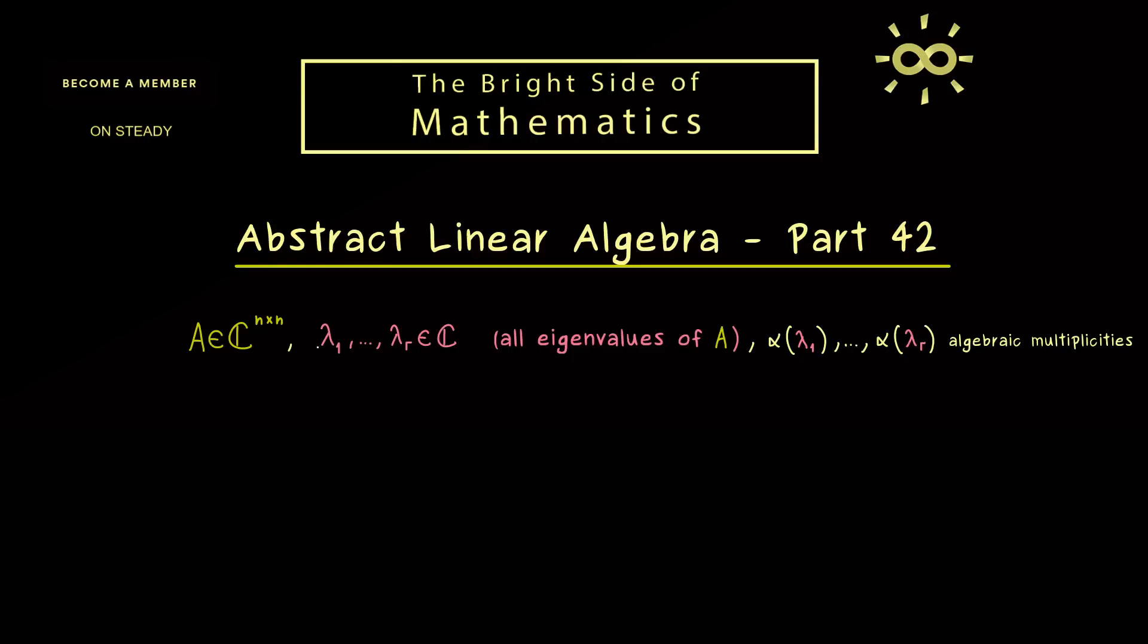And now we can simply fix one eigenvalue, namely λ₁ and apply the result from the last video. Which simply tells us that A is similar to a block diagonal matrix. Let's call the first block A₁ and maybe the other one A₂ tilde. And here it's important to note that part 41 for the eigenvalue λ₁ gives us two pieces of information. First, the size of A₁ is exactly given by the algebraic multiplicity of the eigenvalue λ₁. And second, our block A₂ tilde does not contain the eigenvalue λ₁ at all. Indeed A₂ tilde has all the other eigenvalues but not λ₁ anymore.